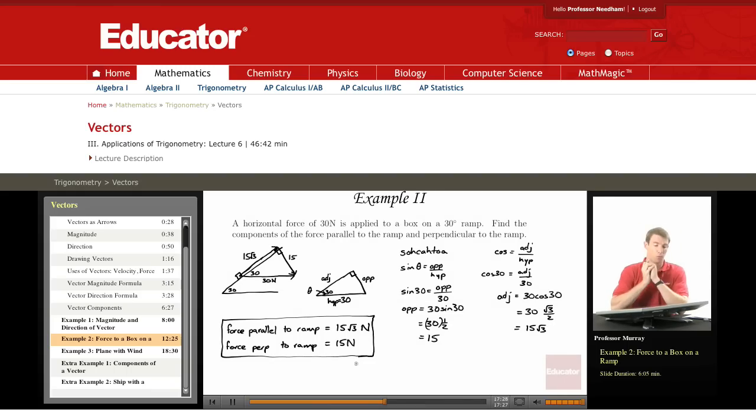Let's recap what made that problem work. We started with a word problem. First thing you want to do is draw a picture. I drew in my horizontal force as a vector, vector 30 units long because it's a force of 30 newtons. Then I was asked to find the components both parallel and perpendicular to the ramp. So I had to break this arrow up into two arrows, one parallel to the ramp and one perpendicular to the ramp.